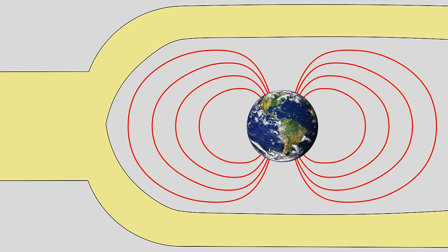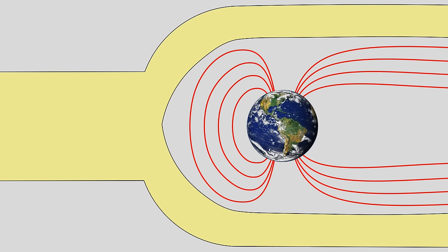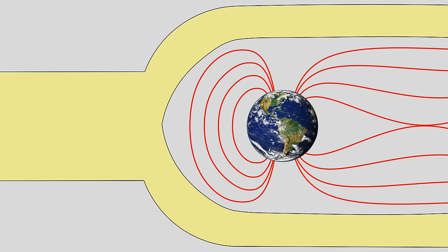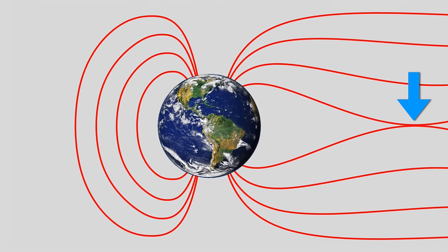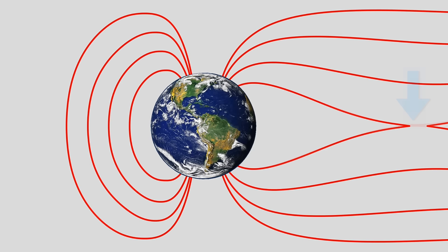The solar wind also deforms the Earth's magnetic field, squishing the front, stretching the tail, and reshaping the field. Things get interesting when two of these magnetic field lines collide. This causes the magnetic field lines to break apart and reconnect.